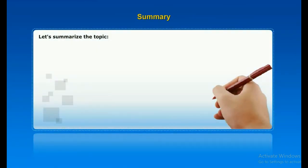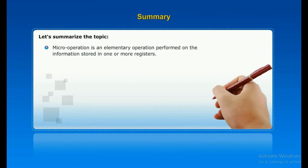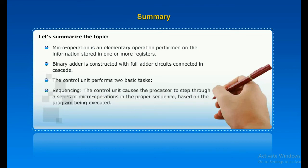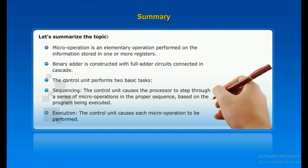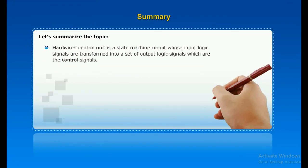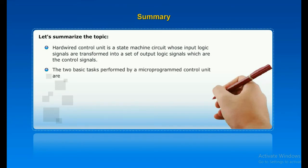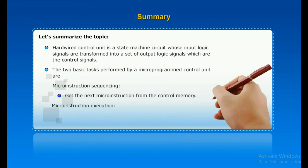Summary: A micro-operation is an elementary operation performed on information stored in one or more registers. A binary adder is constructed with full adder circuits connected in cascade. The control unit performs two basic tasks — Sequencing: causing the processor to step through a series of micro-operations in the proper sequence; and Execution: causing each micro-operation to be performed. A hard-wired control unit is a state machine circuit whose input logic signals are transformed into output control signals. The two basic tasks of a microprogrammed control unit are microinstruction sequencing and microinstruction execution.